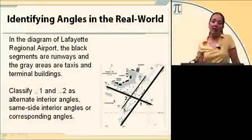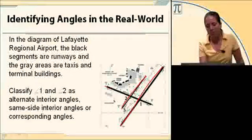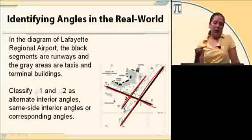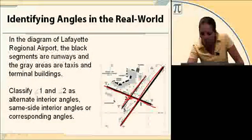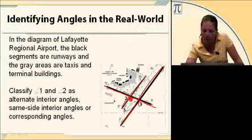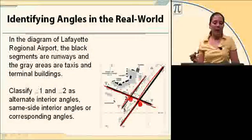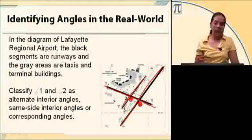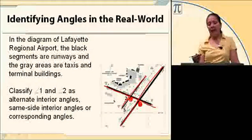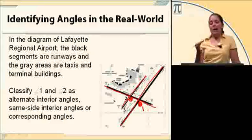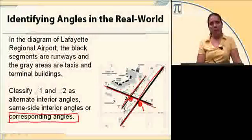Here's a diagram of the Lafayette Regional Airport. The black segments are the runways and the gray areas are taxis. We need to classify angle one and angle two as alternate interior, same side interior, or corresponding angles. Angle one is on the outside — it's an exterior angle — so it can't be alternate interior or same side interior. Checking position, both angle one and angle two are in the lower right, so these two angles are corresponding angles.